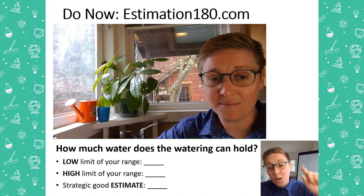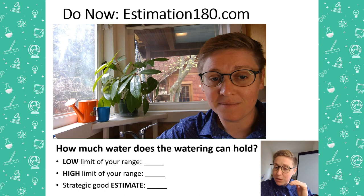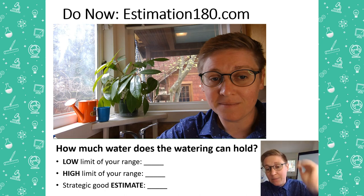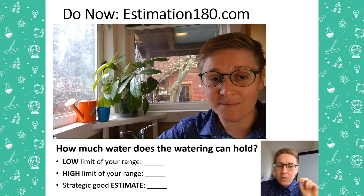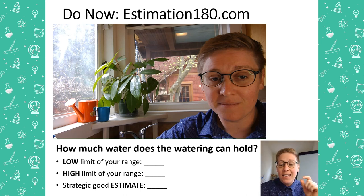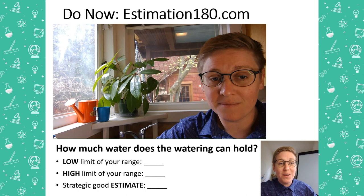Think of a low limit for your range as a reasonable estimate, a high limit of a reasonable estimate, and then come up with what you think would be a good estimate for the number of cups in that watering can. We will reveal the answer at the end of the video.